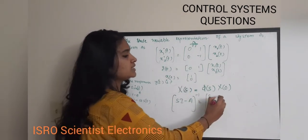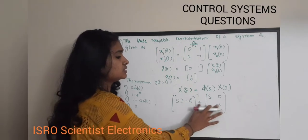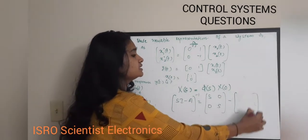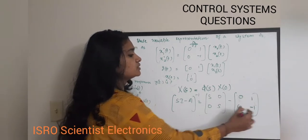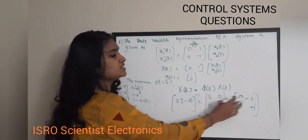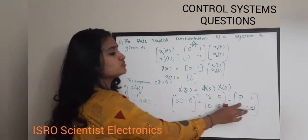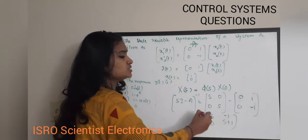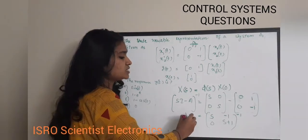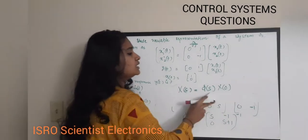Computing sI - A: sI = [s, 0; 0, s], and A = [0, 1; 0, -1], so sI - A = [s, -1; 0, s+1]. This is your matrix whose inverse we need to find to get the state transition matrix φ(s).